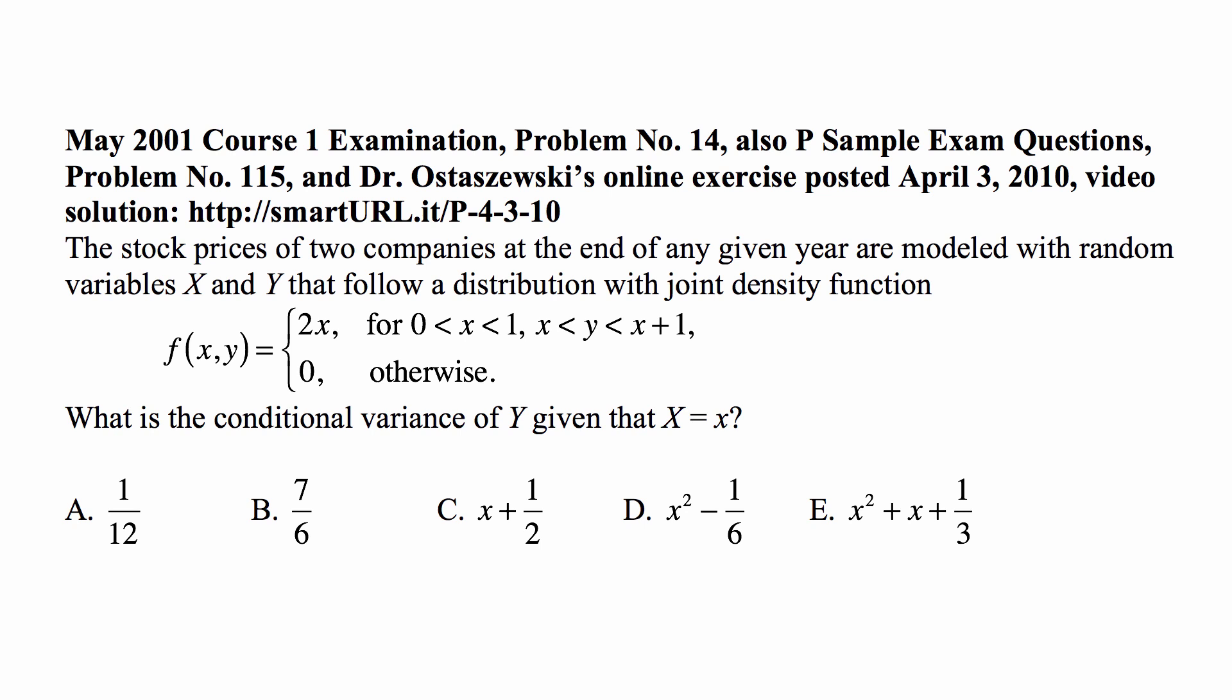that follow a distribution with joint density function equal to 2x for X between 0 and 1 and Y between x and x plus 1. What is the conditional variance of Y given that X is equal to x?